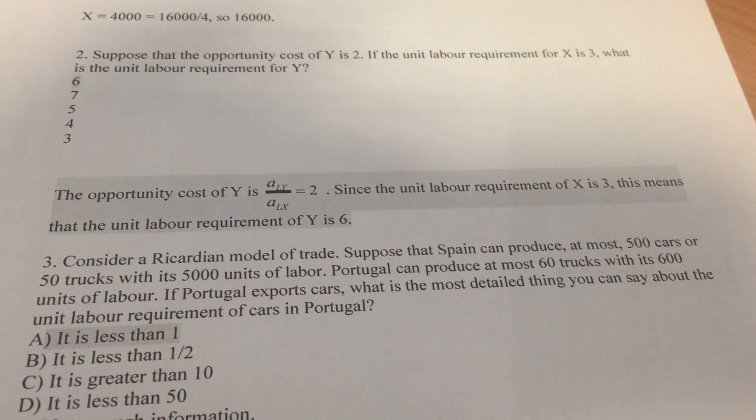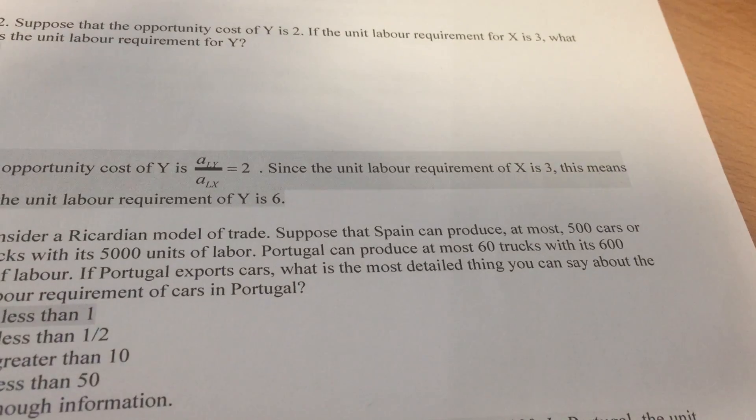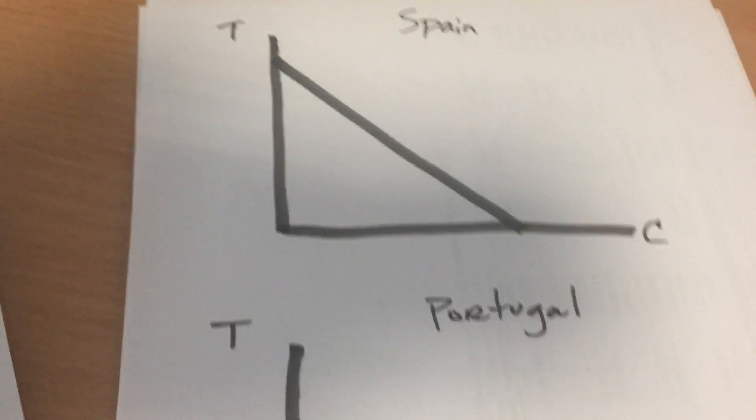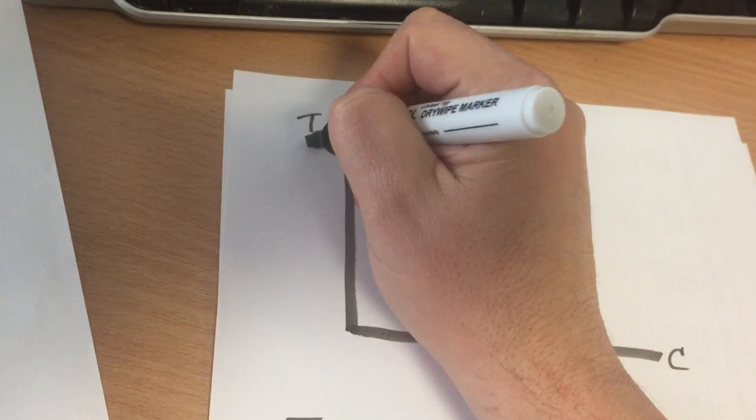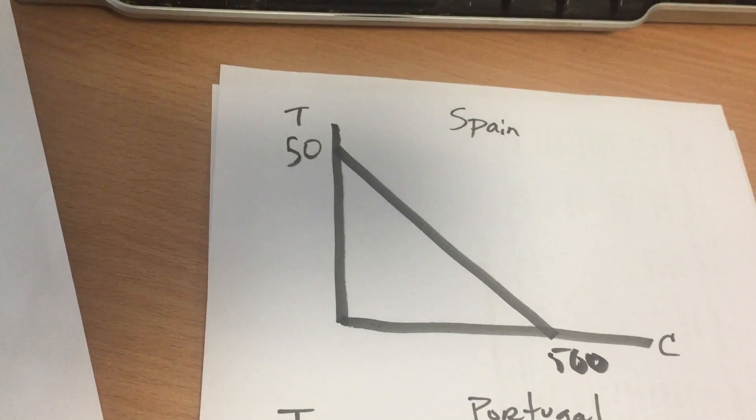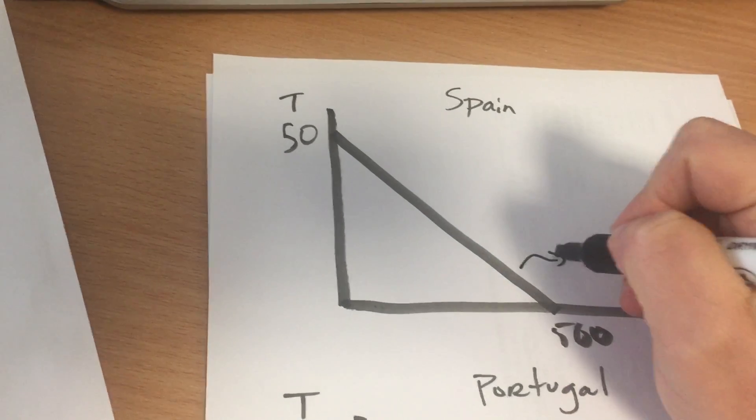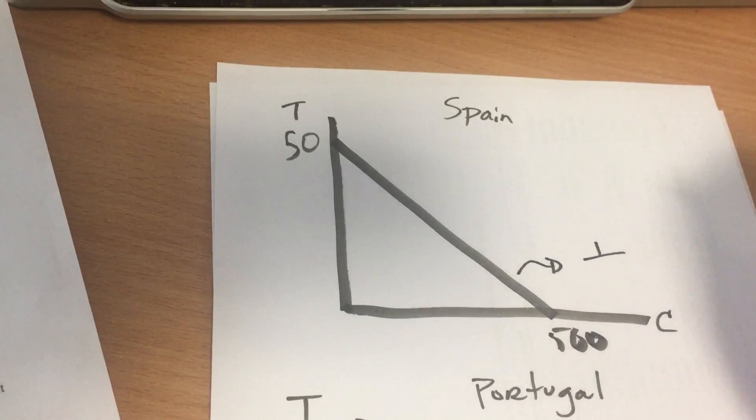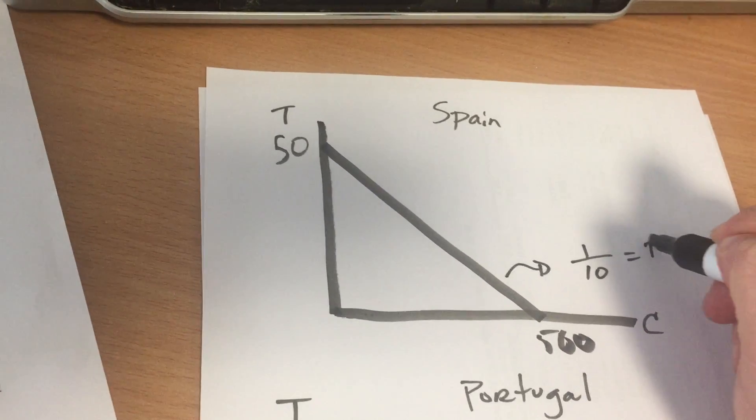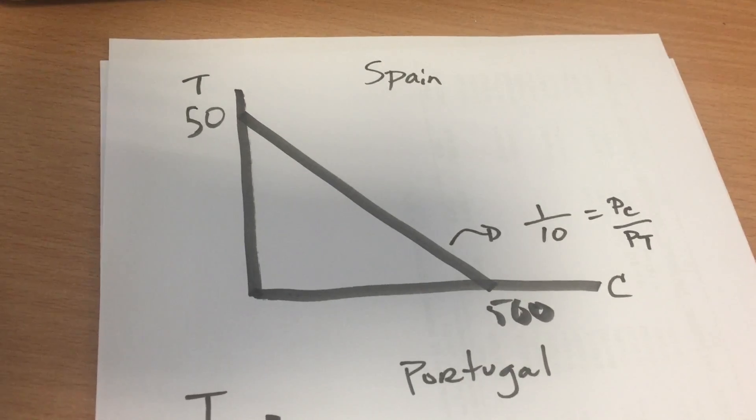So what's the autarky price in Spain? Spain says they can produce at most 500 cars or 50 trucks. So go over and make yourself a PPF. So 50 trucks or 500 cars. So what's the autarky price going to be? Rise over run, 50 over 500, or it's going to be one-tenth. That is the relative price of a car in autarky for Spain.